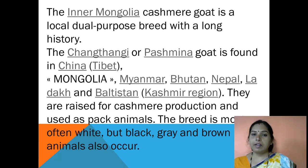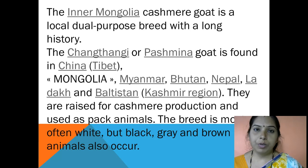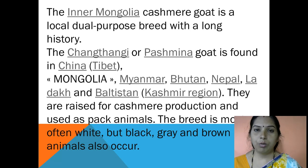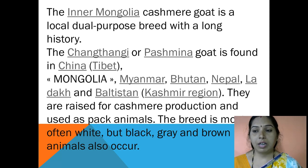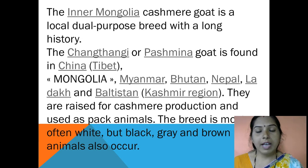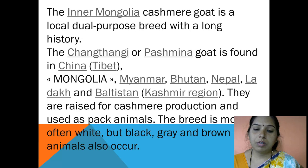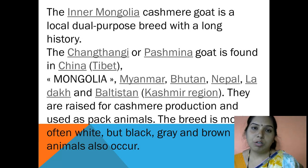Another species is the Inner Mongolia Kashmir goat, a local dual-purpose breed with a long history. The Changthari or Pashmina goat is found in China, Mongolia, Myanmar, Bhutan, Nepal, Ladakh and Baltistan in the Kashmir region. They are raised for cashmere production and also used as pack animals. The breed is most often white, but black, grey and brown animals also occur.